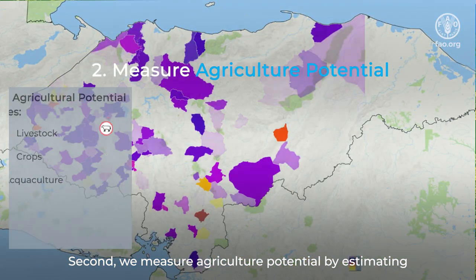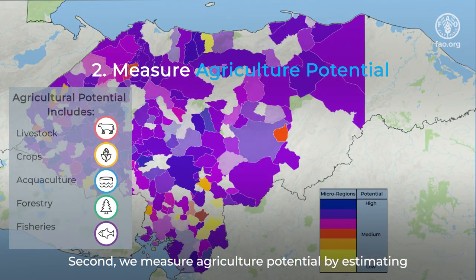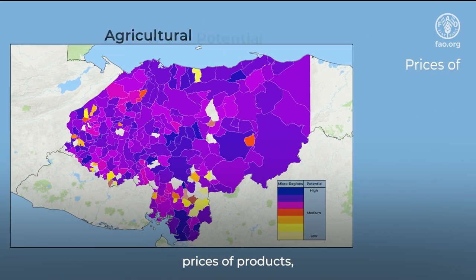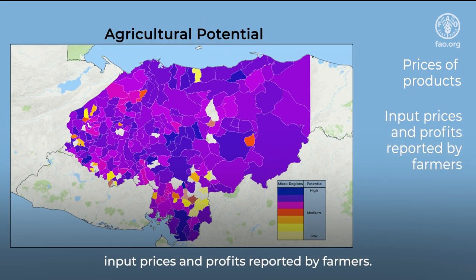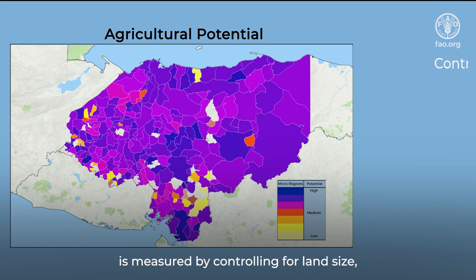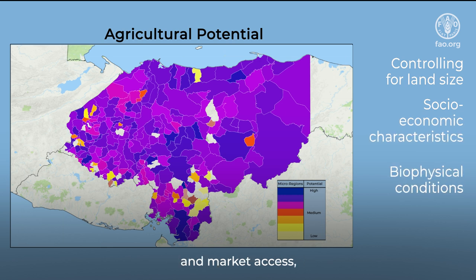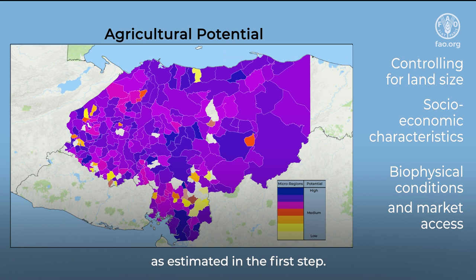Second, we measure agriculture potential by estimating stochastic profit frontiers that bring together prices of products, input prices and profits reported by farmers. The level of efficiency in agricultural profits is measured by controlling for land size, socio-economic characteristics, biophysical conditions and market access as estimated in the first step.